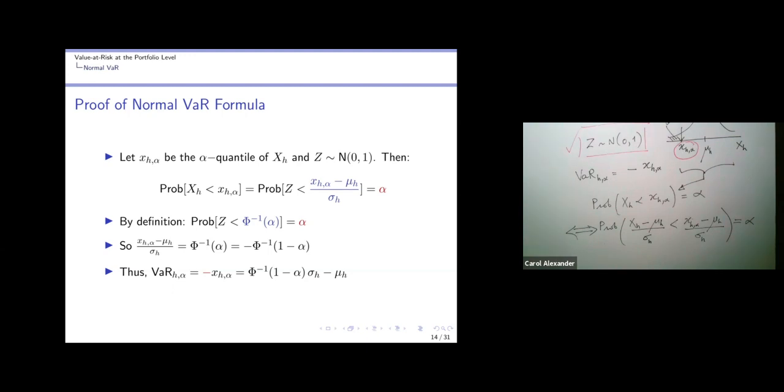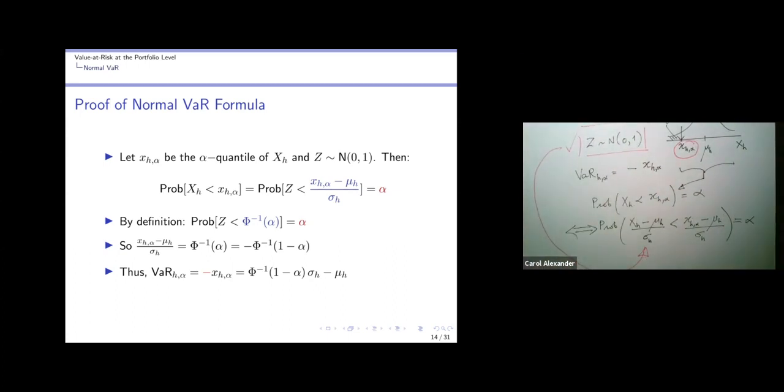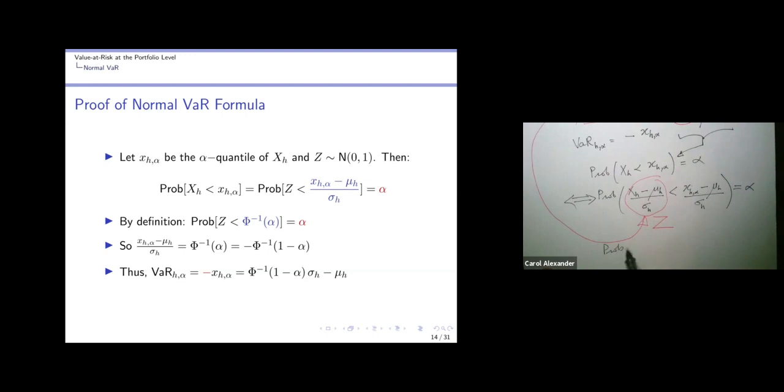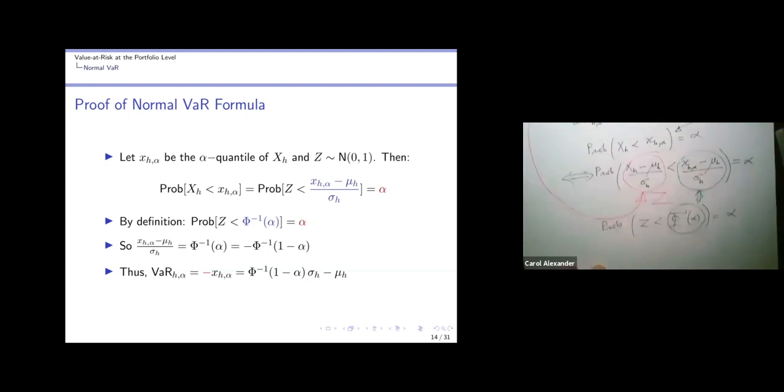Why did I do that? I did that because we've got the standard normal variable here. This is the standard normal transformation. This is Z, which is phi(0,1). And we know that by definition, the probability that Z is less than phi to the minus one alpha is phi. So this is equal to alpha. This thing here must be equal to this thing here. Those two are the same thing.